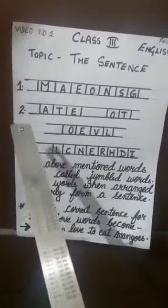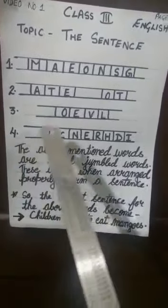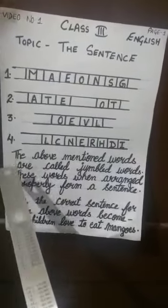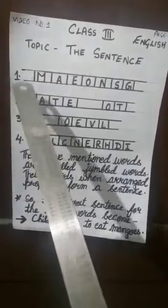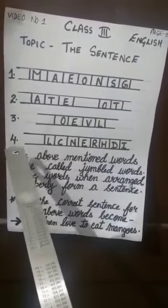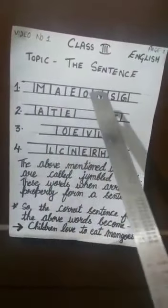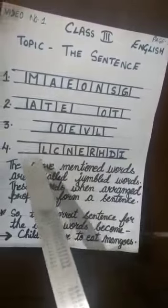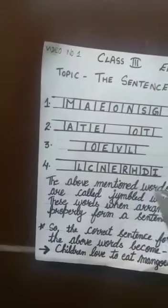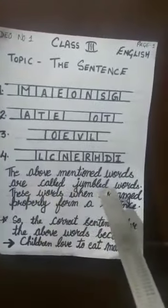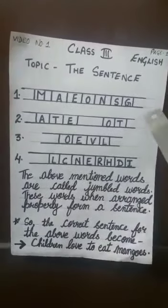Now you all can see here I have written a few words in capital letters and they are placed in boxes. There are one, two, three, four boxes with four to five words. These above mentioned words are called jumbled words.